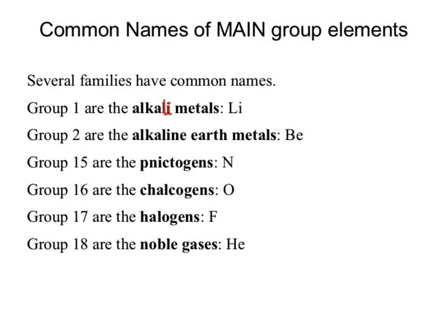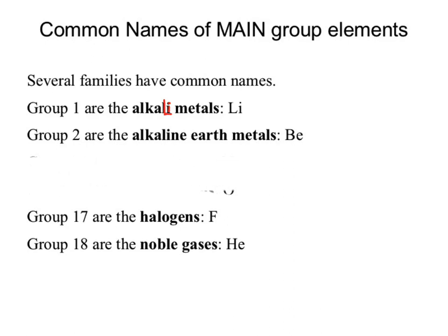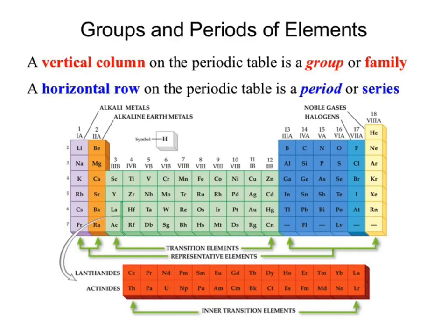You're responsible for tying the names of each column back to the elements within that family. Those four groups you absolutely need to know. You'll hear reference to the transition elements — that entire block from groups 3 to 12. It's relatively minimal for this course. The bottom rows are referred to as the lanthanides and actinides — named after the element that begins each row. We don't stress about those since they're radioactive and rarely encountered.